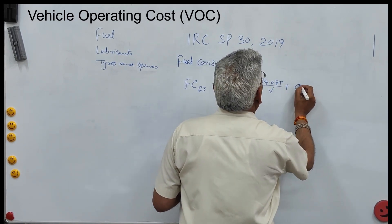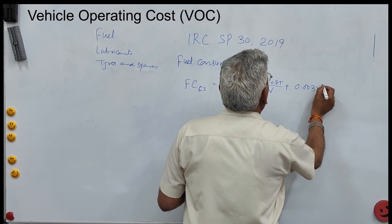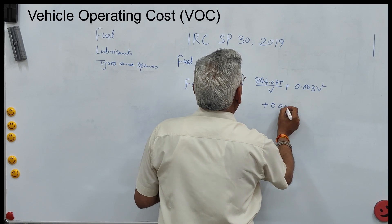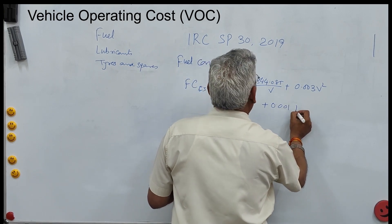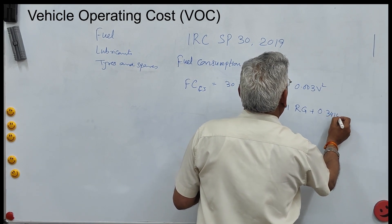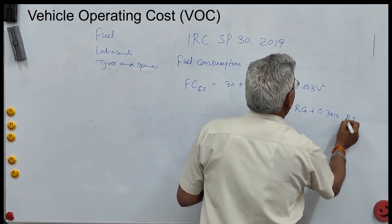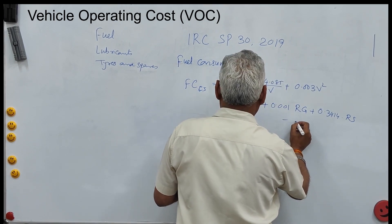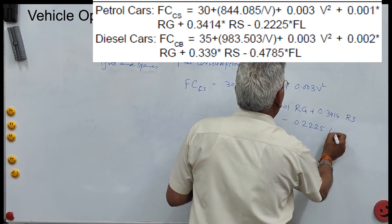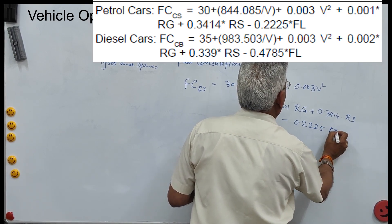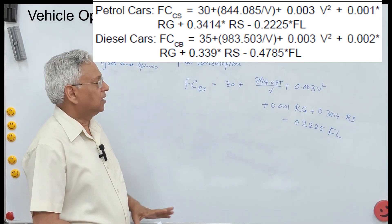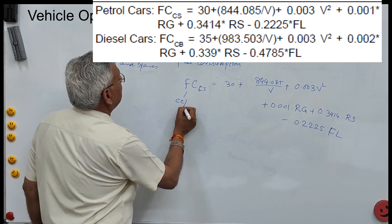The full fuel consumption equation for a small car is: 30 + 844.085/V + 0.003V² + 0.001V²·Rg + 0.3414·Rs − 0.2225·FL. The unit of this fuel consumption is cc per kilometer.